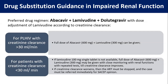For drug substitution guidance in impaired renal function: the preferred drug regimen is abacavir, lamivudine, and dolutegravir, with dose adjustment of lamivudine according to creatinine clearance. For PLHIV with creatinine clearance more than 30 ml per minute, no dose adjustment is required and we can give full doses of abacavir and lamivudine. For patients with creatinine clearance less than 30 ml per minute, if lamivudine 100 mg single tablet is not available, full dose of abacavir and lamivudine can be given with close monitoring of renal functions. If creatinine clearance worsens, ART must be stopped and the case must be referred immediately.